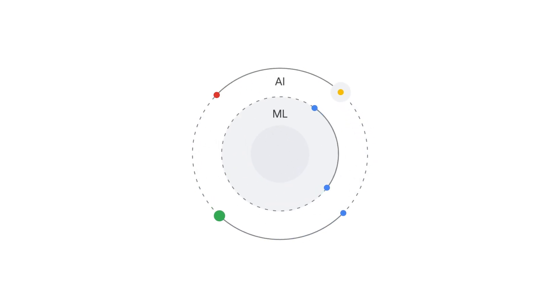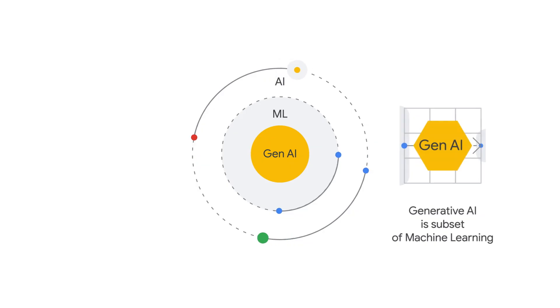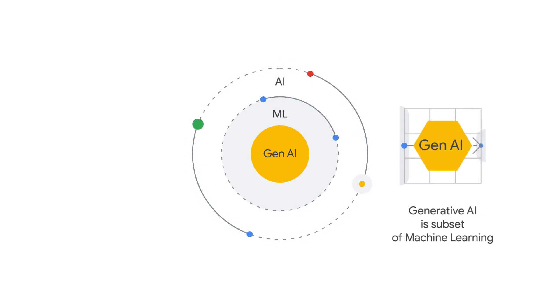Where does Gen AI fit into all this? Gen AI, short for generative AI, is a subset of machine learning that focuses on creating new content — like images, text, or music. So while other types of AI might analyze data to predict an outcome, like whether an email is spam or not, generative AI uses data to create something entirely new.